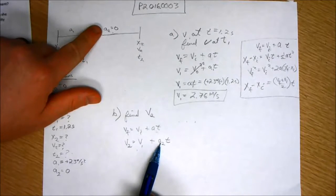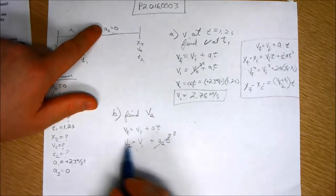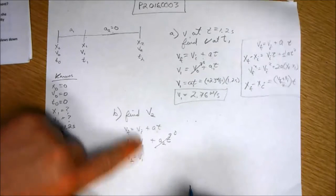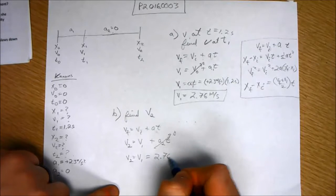because we're talking about the second acceleration here, that equals 0. So, we don't have to worry about the time. We know the velocity here equals the velocity there, v2 equals v1, which equals 2.76 meters per second.